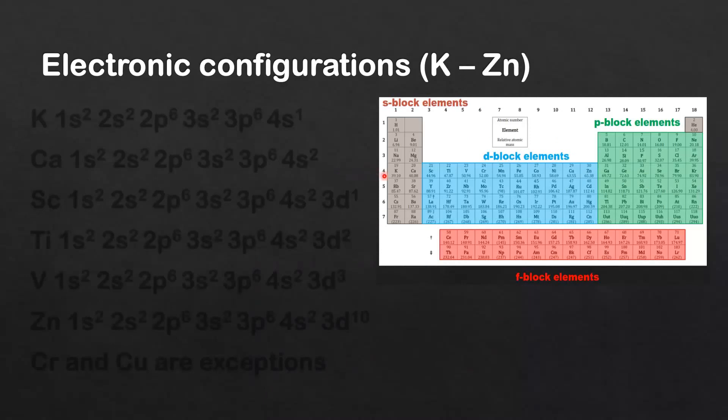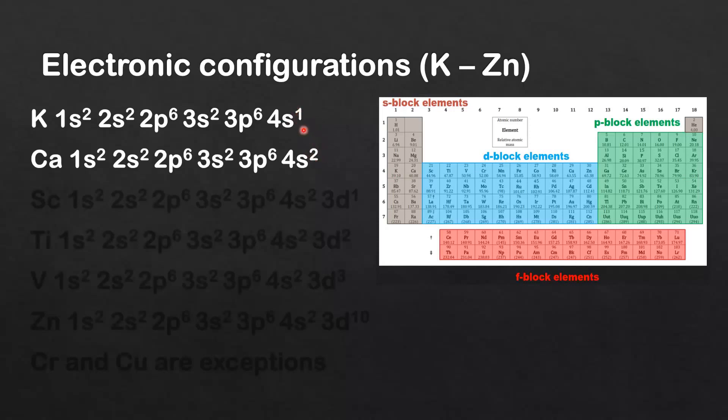Now we're on to period 4, that's potassium to krypton. We'll start with potassium and calcium; they are s-block elements. Then we get to the first of the d-block elements, which is scandium.